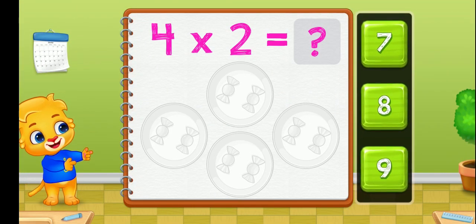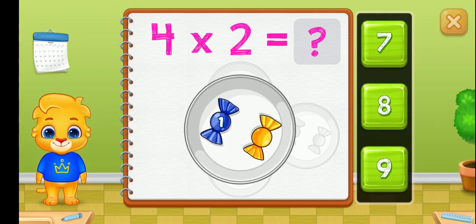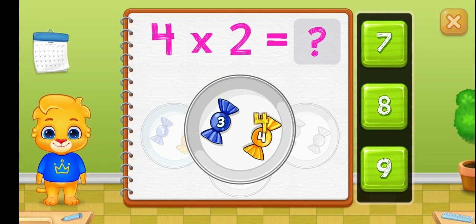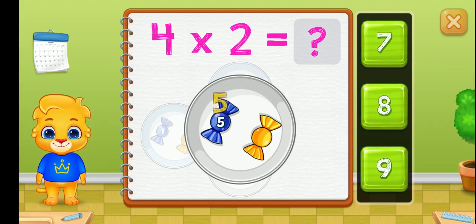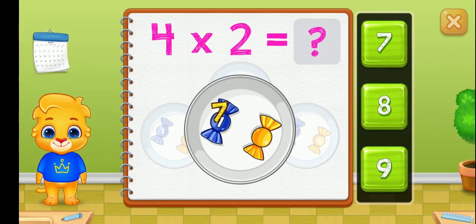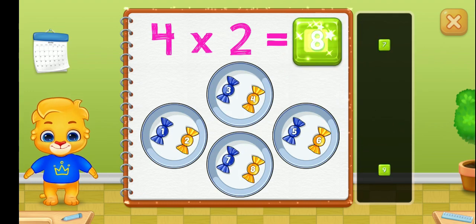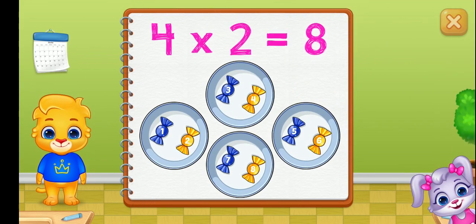Let's learn to multiply using groups. One, two, three, four, five, six, seven, eight. Four groups of two equals eight.